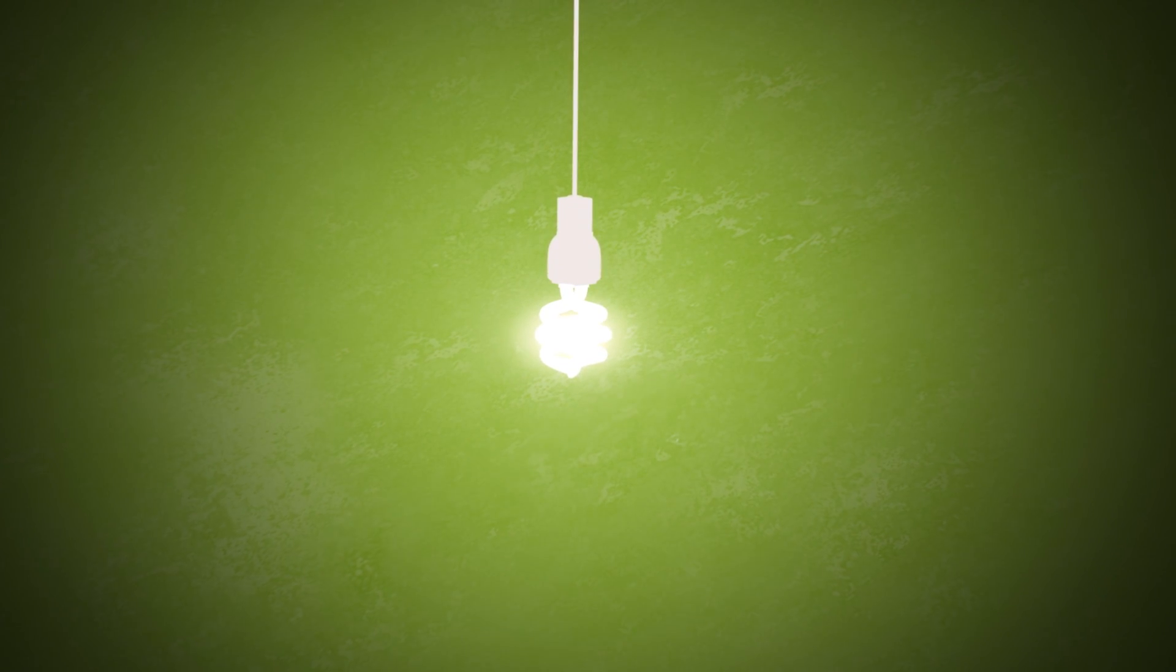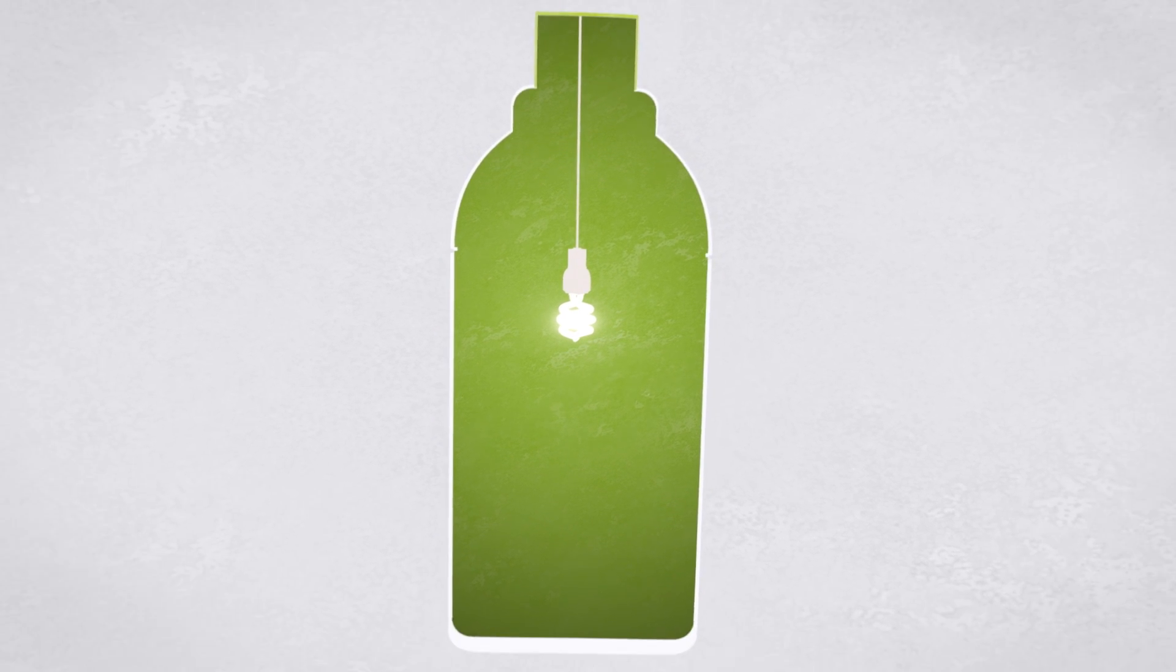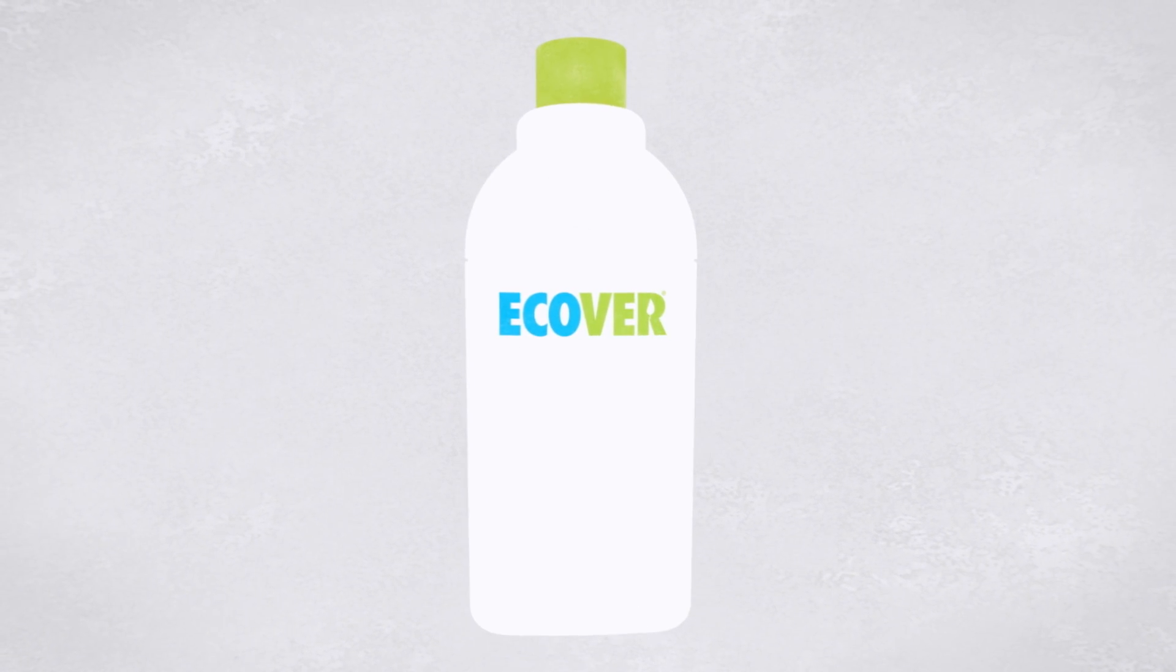It's estimated that recycling just one bottle can save enough energy to power a 60 watt light bulb for a whole six hours. So you can see why we think introducing recycled plastic in our bottles is such a good idea.